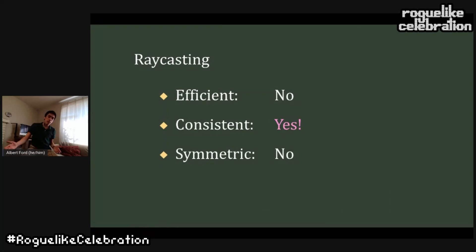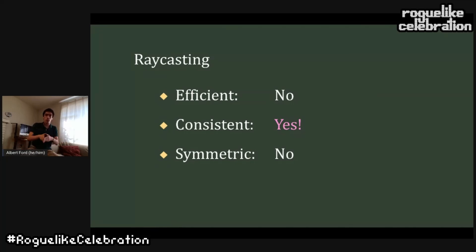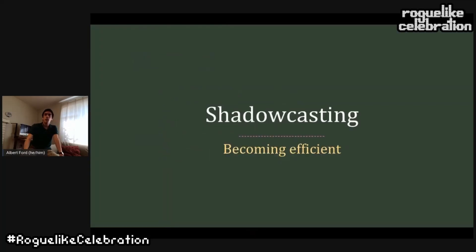The upside, though, is we did get one out of three. Raycasting is a very consistent algorithm — it works very well with line of sight, precisely because it pretty much is line of sight, just line of sight repeated over and over. But in terms of efficiency, if we want to solve that problem first, we need to turn to a different approach.